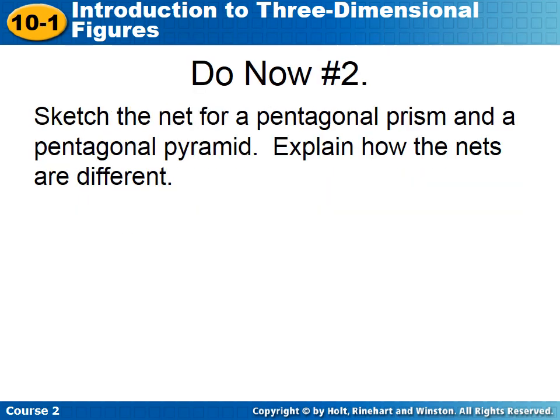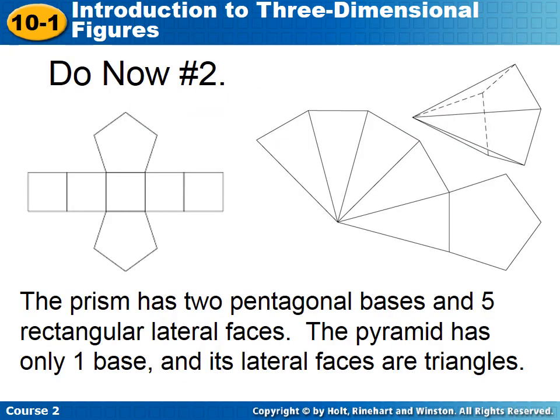So for this do now, we want you to sketch the net for a pentagonal prism and a pentagonal pyramid. And then explain how those nets are different. Here are the answers to the do now. Your nets might look slightly different, but pretty similar to the ones that we have here. On the left is our prism, and on the right is our pyramid. The net for the prism has two pentagonal bases, connected by five rectangular faces. The pyramid, on the other hand, has only one base, and its lateral faces are triangles.